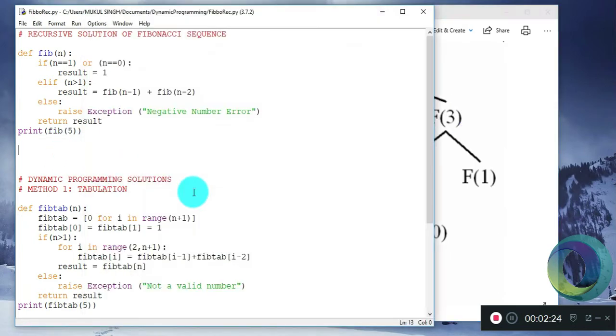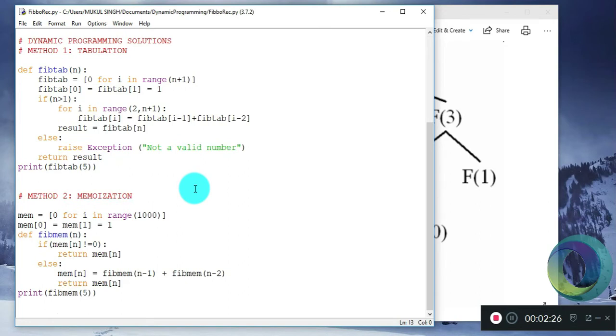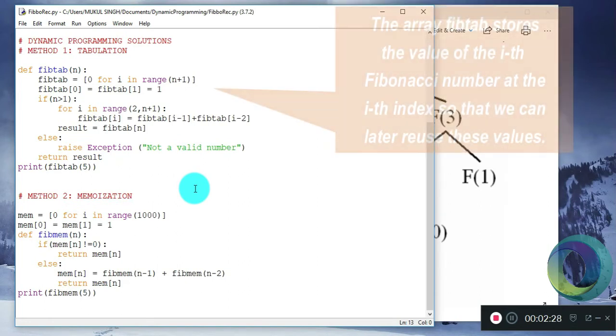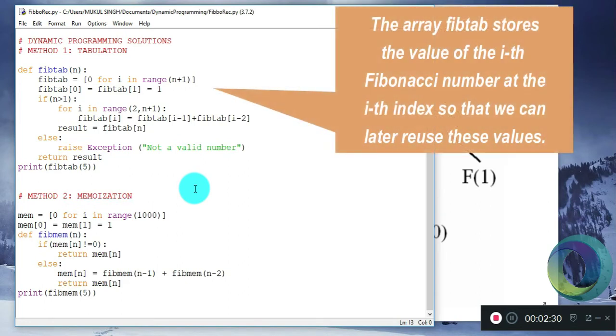There are two methods to do dynamic programming: tabulation and memoization. Tabulation is also known as the bottom-up approach. As the name suggests, we start at the bottom of the tree and move towards the top.